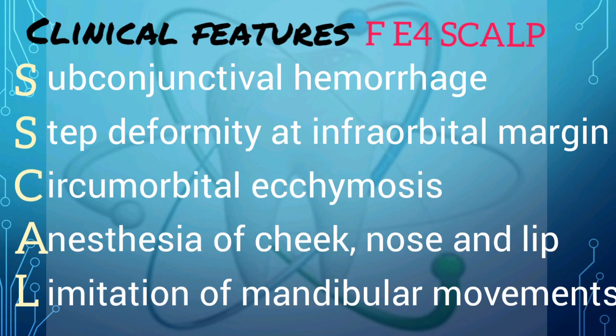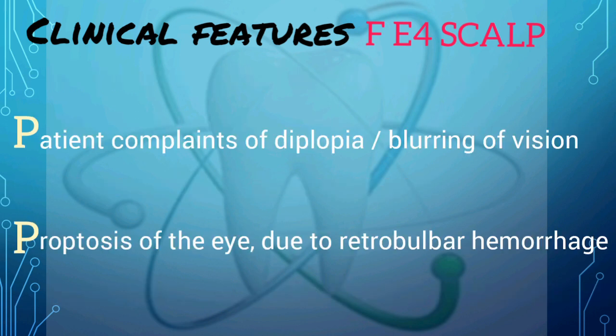The C stands for circumorbital ecchymosis. The A stands for anesthesia of the cheek, nose, and lip. The L stands for limitation of mandibular movement. The two P's stand for: the patient may complain of diplopia and/or blurring of vision, and proptosis of the eye which is due to retrobulbar hemorrhage.